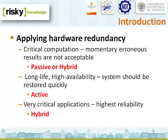According to the system to protect, the different types of hardware redundancy can be applied. Some examples are shown in this slide. Critical systems where momentarily erroneous results are not acceptable should be protected by using passive or hybrid active redundancy. On the other hand, long-life and high-availability systems that should be restored quickly after a fault is detected must be protected by using active redundancy. Finally, very critical applications with the highest reliability should be protected by using hybrid redundancy.